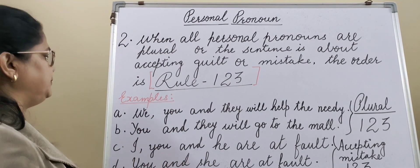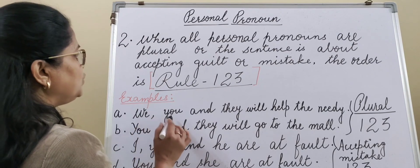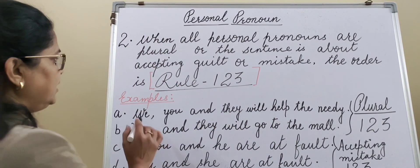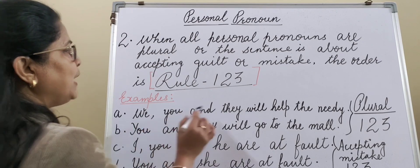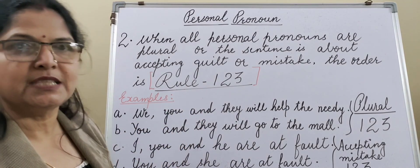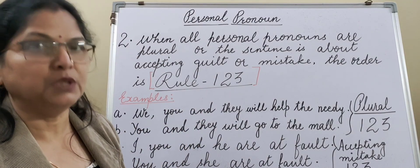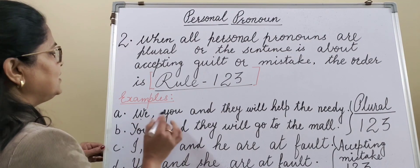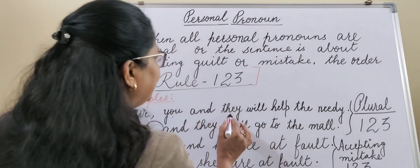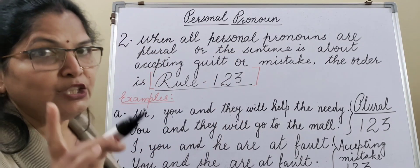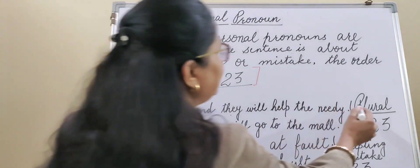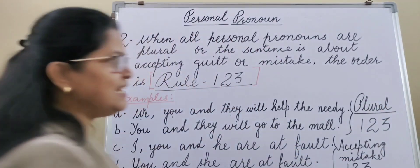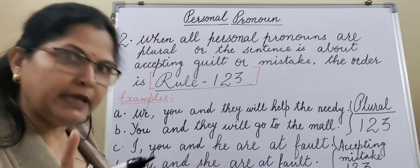Example A: 'We, you and they will help the needy.' Here you see — we, you, and they. All three persons are plural. So in that condition, first person, then second person, and then third person is used. Remember: when personal pronouns are all plural, Rule 123 will be followed.